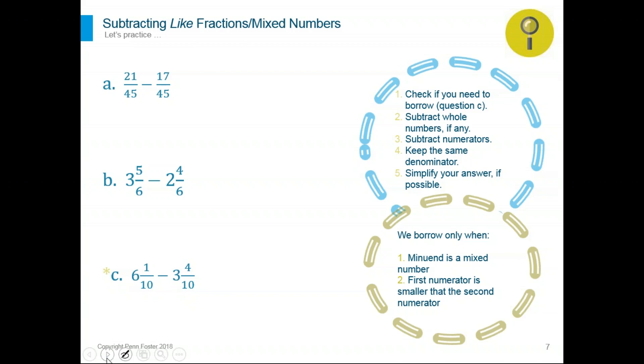We're going to subtract the numerator. So number A, 21 over 45 minus 17 over 45, common denominators. So simply subtract 21 minus 17 will give you 4, divided by 45. 4 and 45, nothing common between 4 and 45. So the final answer is 4 over 45.